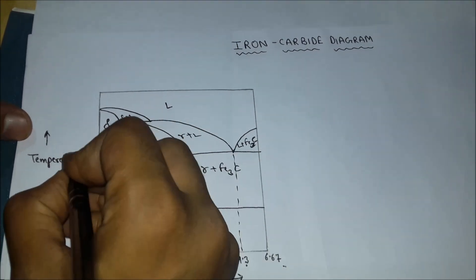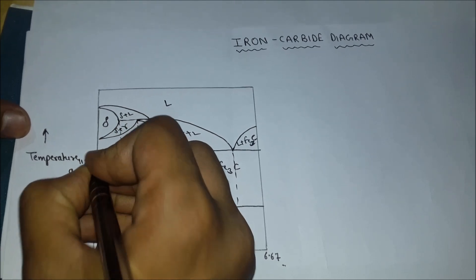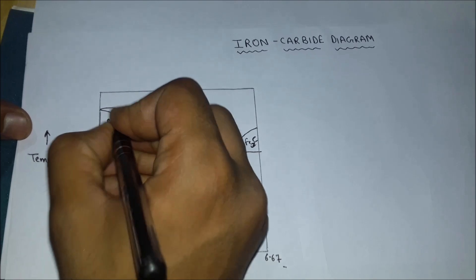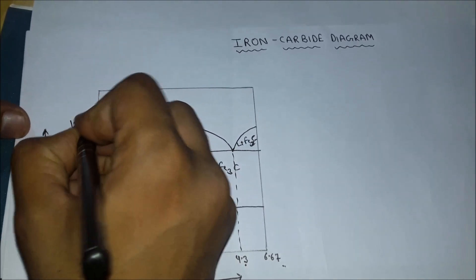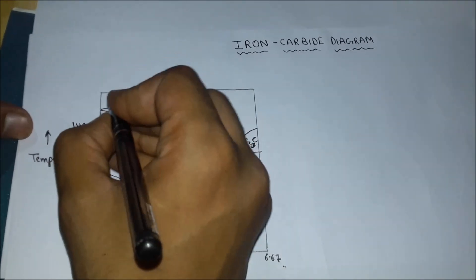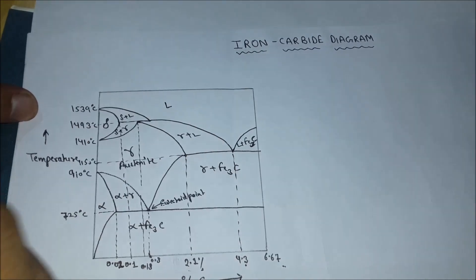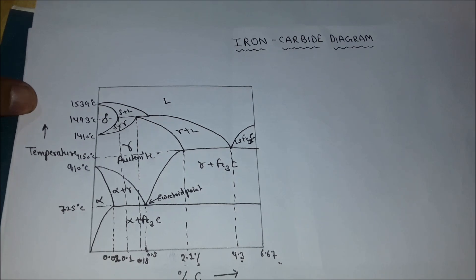This temperature is 910 degrees Celsius. This line is 1150 degrees Celsius. This is 1410 degrees Celsius, and this is 1493 degrees Celsius. And this is the melting point of pure iron, that is 1539 degrees Celsius.